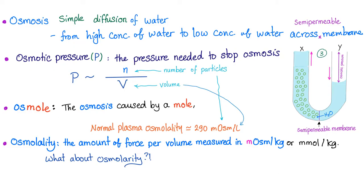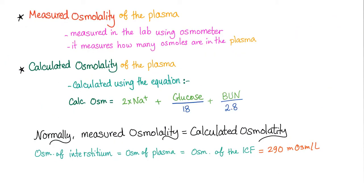Osmotic pressure is the pressure needed to stop osmosis, which happens to equal the pressure of osmosis. An osmol is osmosis caused by a mole. Normal osmolality of the plasma is 290. Osmolality is the amount of force per volume, measured in milli-osmoles per kilogram. Osmolarity is per liter. Measured osmolality is measured in the lab; calculated osmolality is calculated using the equation, depending on the big three. Normally, measured equals calculated, or measured is greater than calculated by less than 10. If more than 10, then the osmolar gap is more than 10 — Houston, we have a problem.